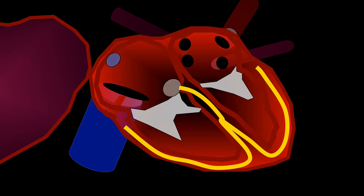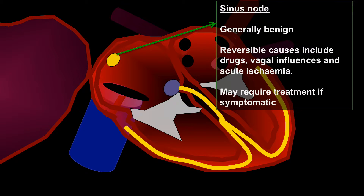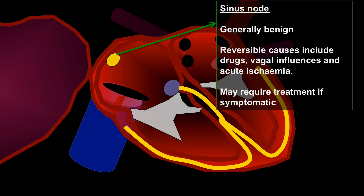When we see bradycardia this could be from sinus node disease. This is generally benign and has a number of reversible causes, particularly drugs, vagal influences which are very common in young people, and also acute ischaemia. The right coronary artery gives a branch to the sinus node, so in inferior myocardial infarction this should always be looked for. This may require treatment if patients are symptomatic but it rarely needs to be treated urgently.